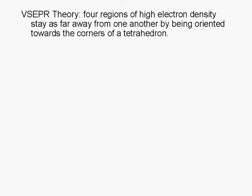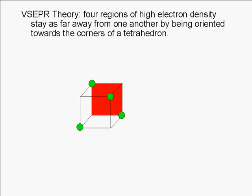According to the VSEPR theory, four regions of high electron density would need to be oriented towards the corners of a tetrahedron in order to be as far away from each other as possible. But what is a tetrahedron? Imagine a cube. If we put our central atom in the middle of this cube, then the four corners of the tetrahedron are indicated here by the green circles.